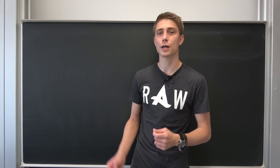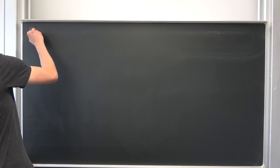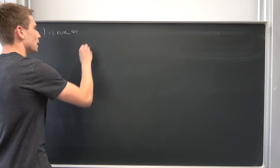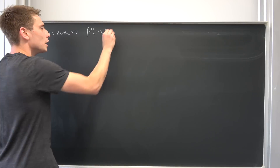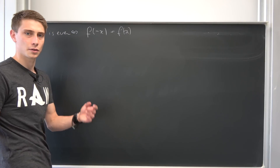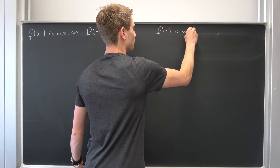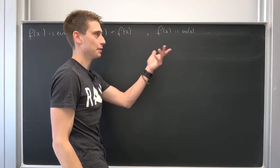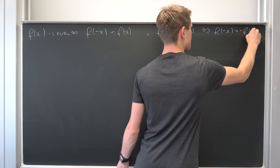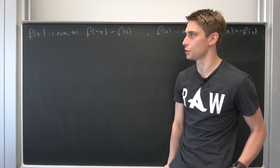Before getting started with the real proof, I would like you guys to remember what odd and even actually means. So suppose that f of x is even. What does it mean for a function to be even? Well, if you plug in minus x into this function — f of minus x — we end up with f of x; it stays as it is. And in the other case, suppose that f of x is odd. What does it mean for a function to be odd? It just means that f of minus x is nothing but minus f of x.